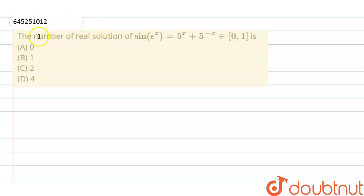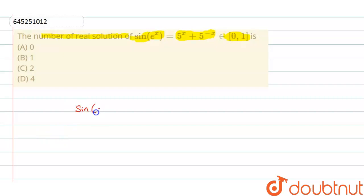Hello students. In this question we need to find the number of real solutions of sin(e^x) = 5^x + 5^(-x), where x belongs to [0, 1].